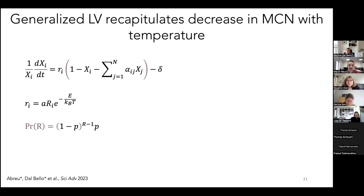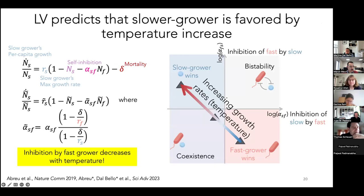Going back a slide — in the Lotka-Volterra formulation, the interaction coefficient alpha represents the effect of the fast grower on the slow grower.